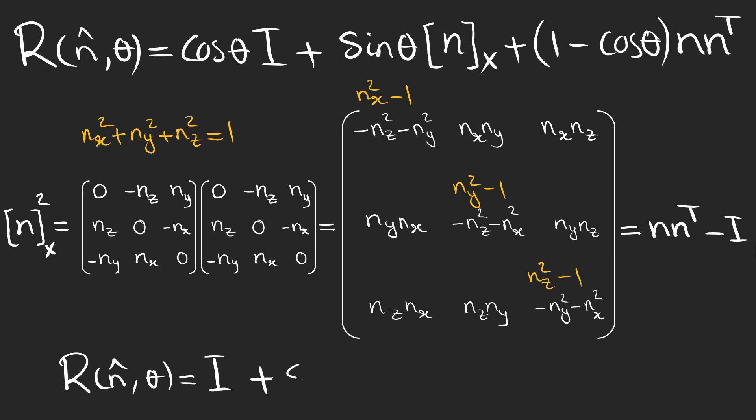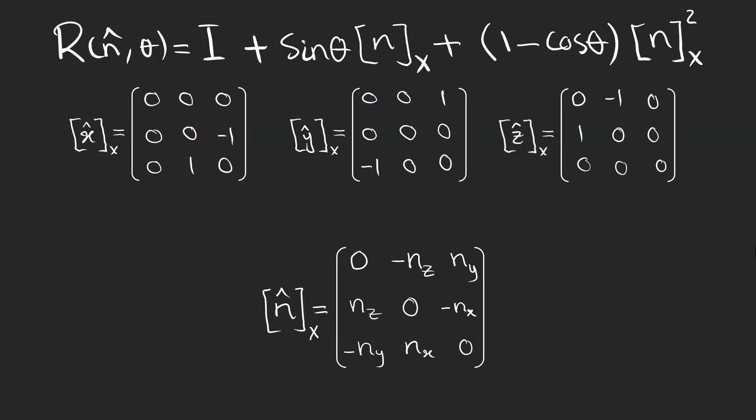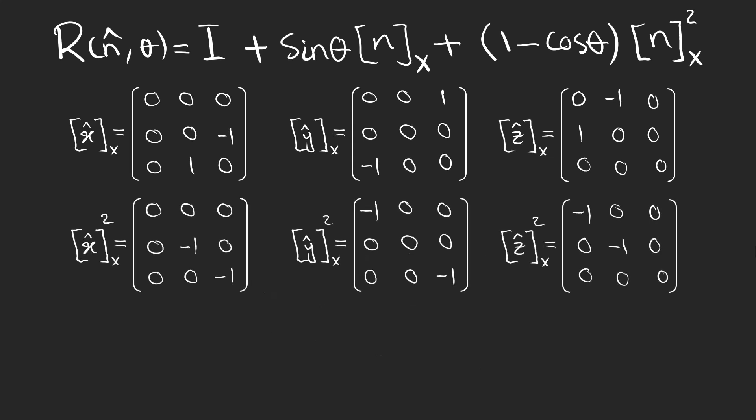This is another form of writing the rotation matrix in terms of one of the square matrices. As an example, by using the three unit vectors along the three coordinate axes, we can write these three matrices. And we can easily find the squares.